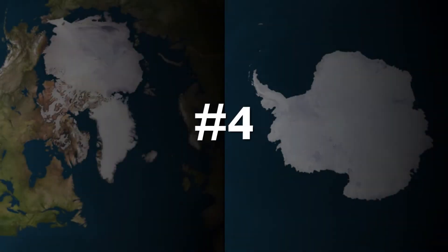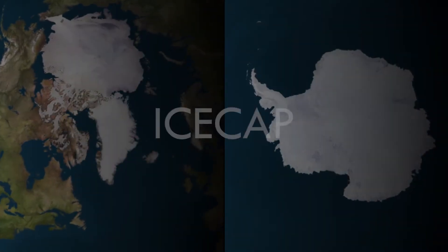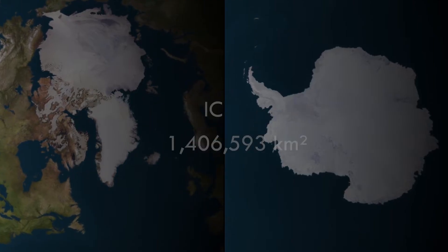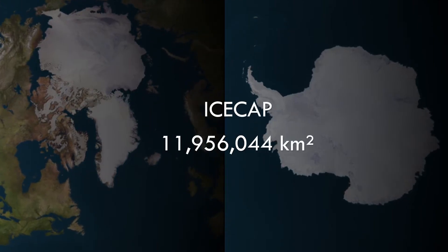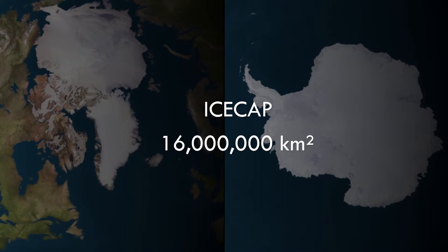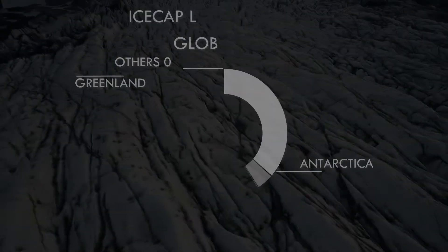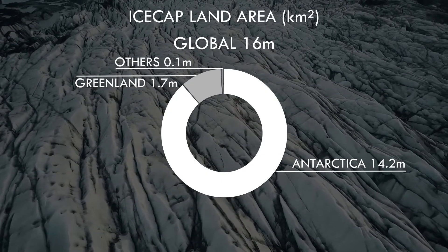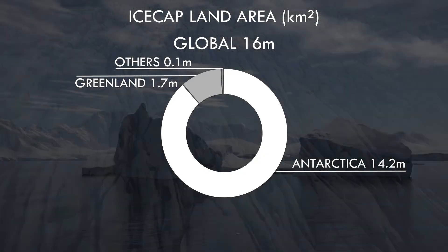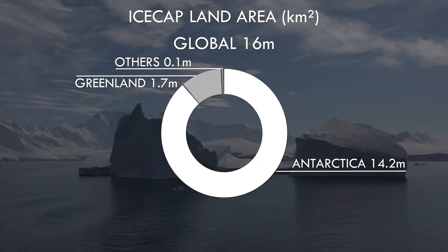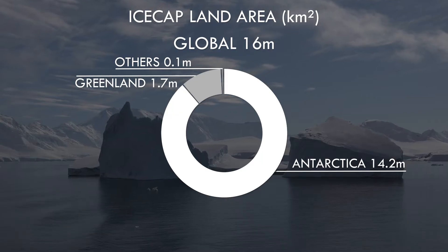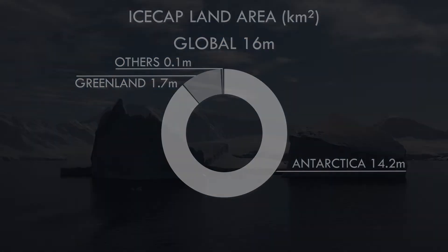Onto number four, and it's the most forbidding of all climate zones – the ice cap. Almost the entirety of the large continent of Antarctica is covered in ice year round, and this continent alone makes up the vast majority of land area of this climate type, with the remainder being in Greenland and a comparatively tiny scrap as glaciers across the highest mountains in the rest of Earth.